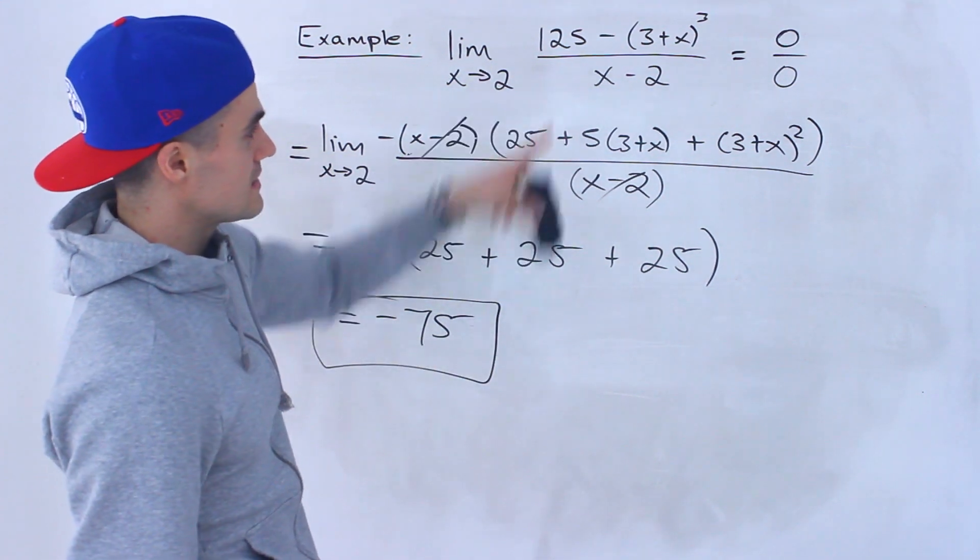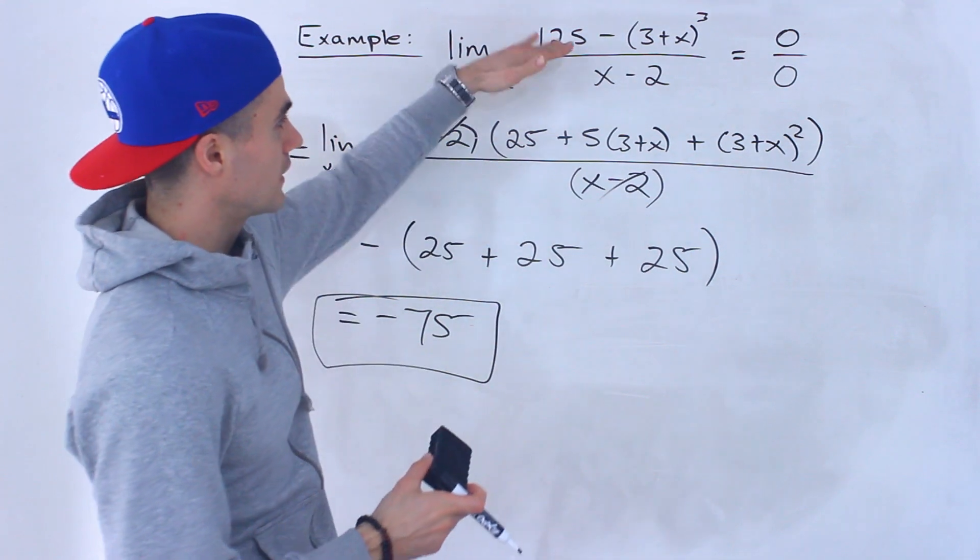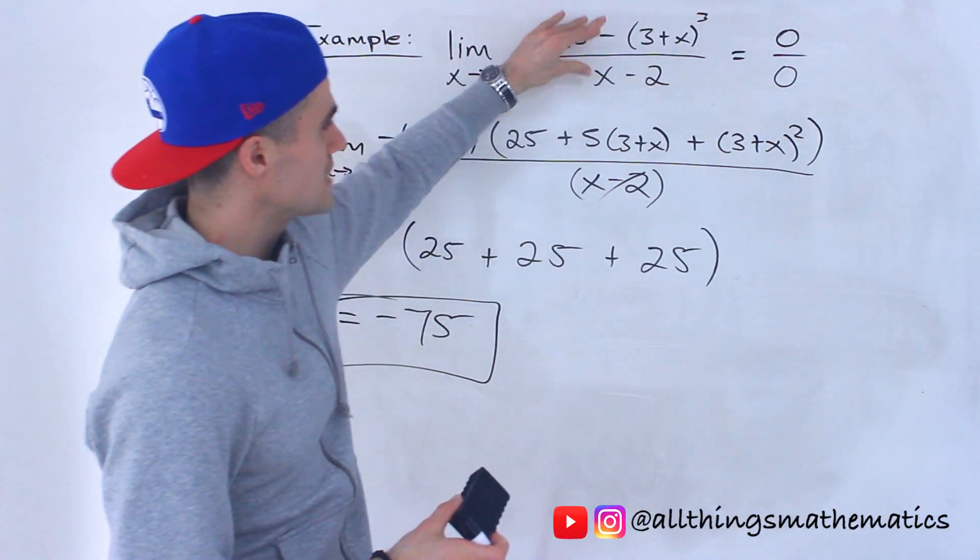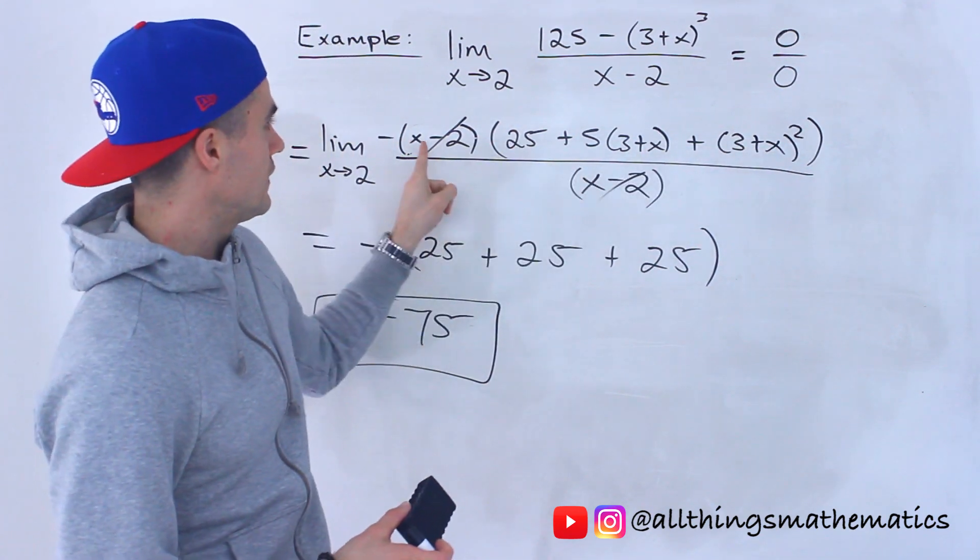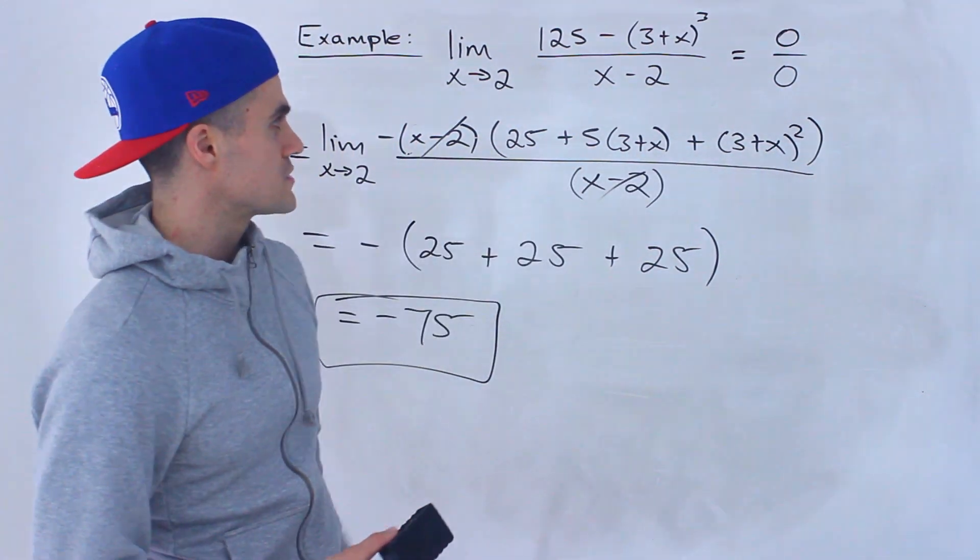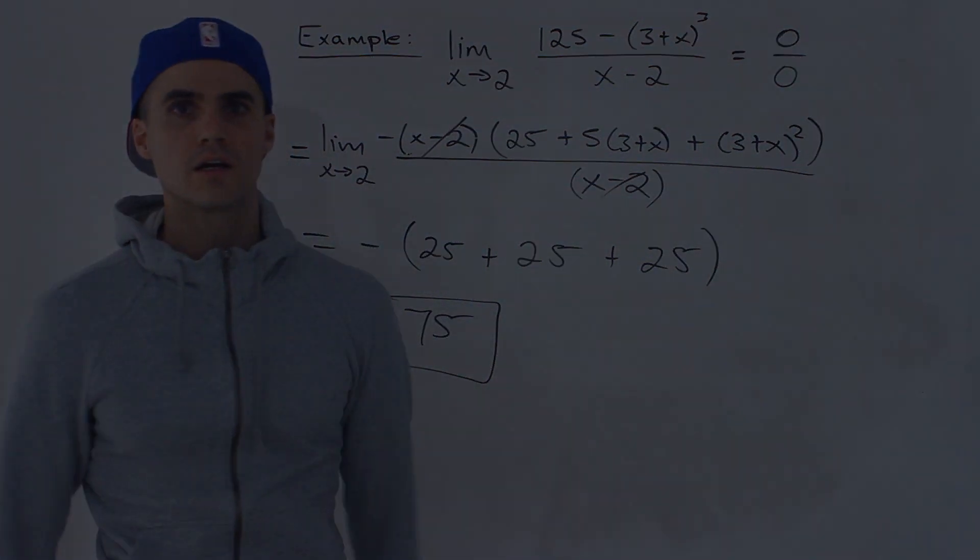So that there is the answer to this limit. So it's just recognizing that this is a difference of cubes, and then just getting this bracket could be tricky, and then even recognizing how the x minus 2s cancel out. So a fairly unique limit.